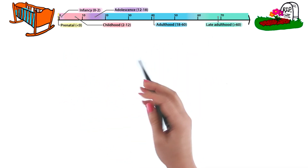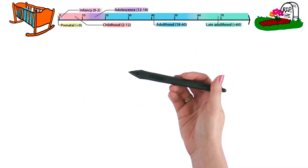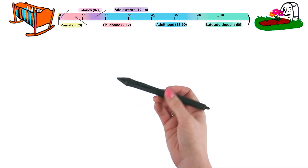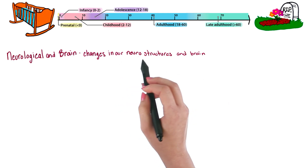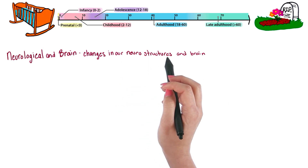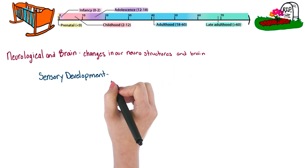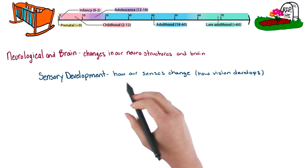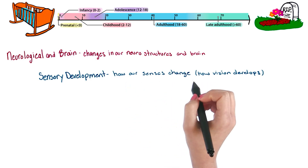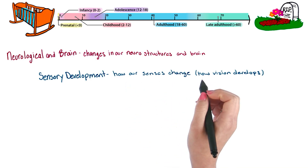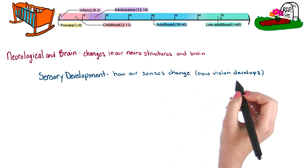Within these stages, there are domains or topics that psychologists are interested in. The first focuses on the changes in our neurological structures and brain. Then we have sensory development, which focuses on how our senses change as we develop — for example, how our vision develops.